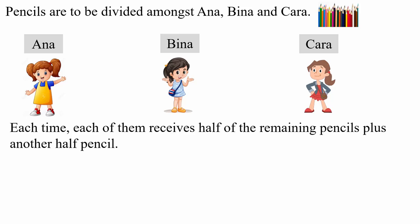For each person, each of them will receive half of the pencils that remain each time, in addition to another half pencil. So Anna will receive half of the initial amount of pencils plus another half pencil. Bina will receive half of the remainder after Anna receives her share plus another half pencil. And Kara will receive half of the remaining pencils after Bina has had her share plus another half pencil.